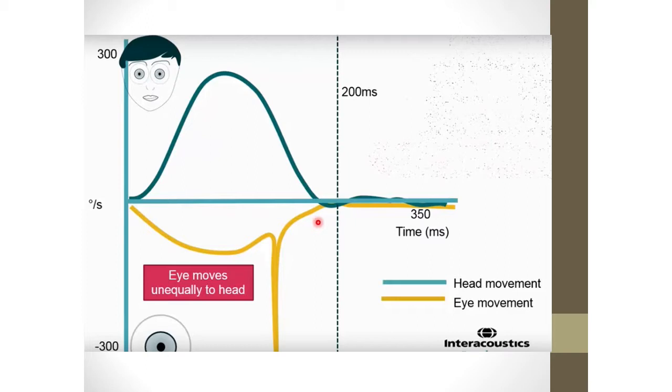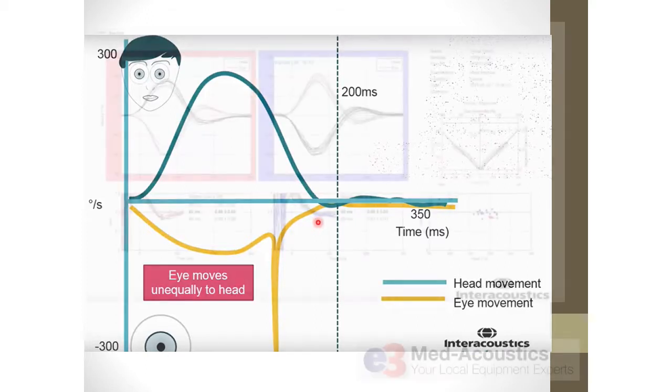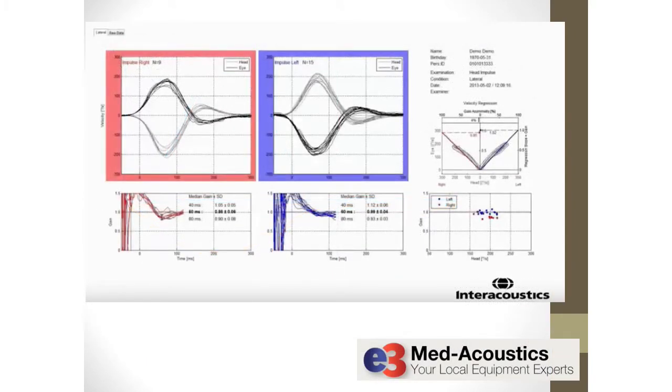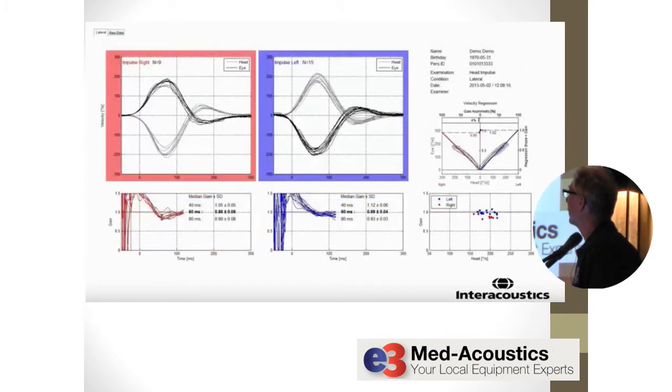So you're just going to make about 10 to 15 of these impulses in each one of these directions. You're going to do a right and left lateral and then you're going to do the LARP and the RALP test and you've got them all. And in the end, a normal patient is going to look like this. These were the two lateral canals, right and left. And you end up with a trace that is symmetrical like this and there are no corrective saccades, either covert or overt in there.